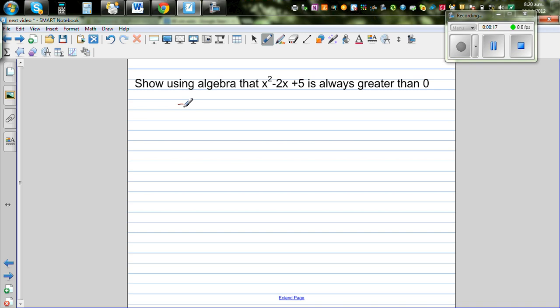I'm going to use the method called completing the square. So x² - 2x + 5, I want to show, is positive, is always greater than 0. This is what I want to prove or show.